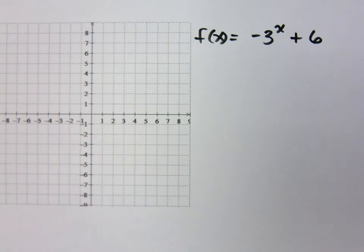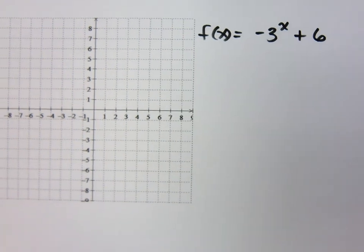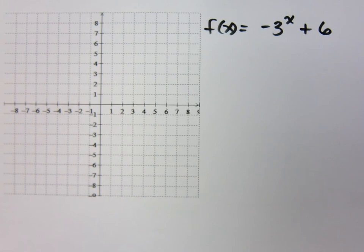Let's take a look at negative 3 to the x plus 6. Make sure when you write this, you're writing the x as an exponent and not as negative 3 times x. Because if it were just negative 3x plus 6, it's just a line. But that's not what we have.